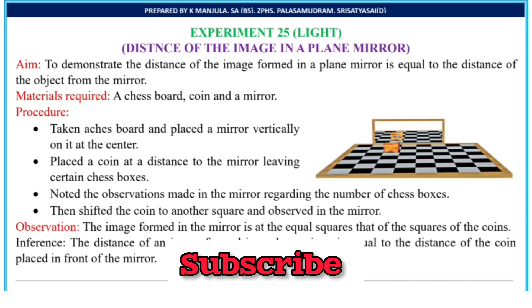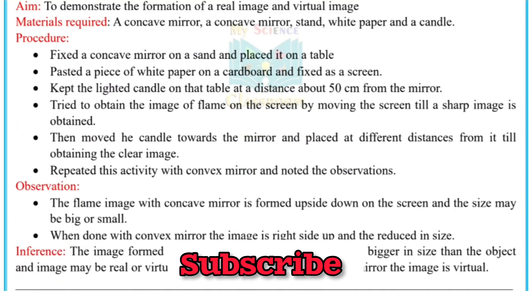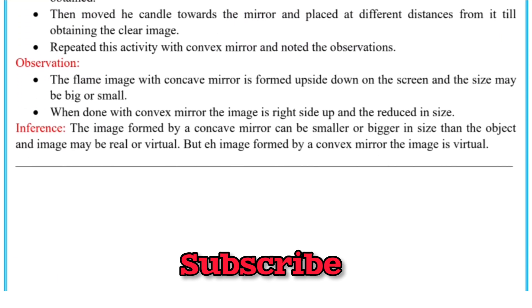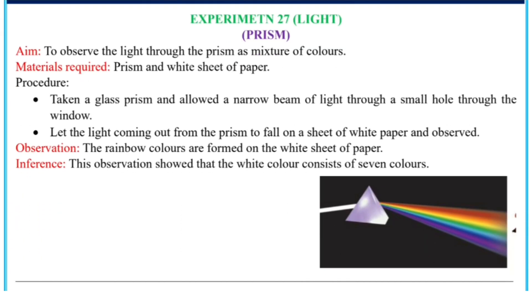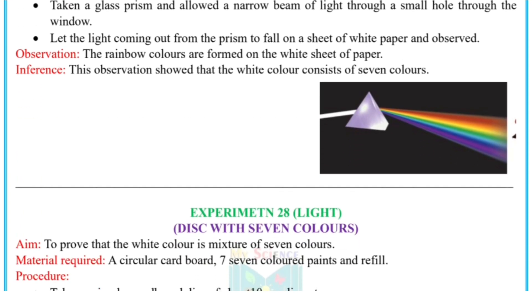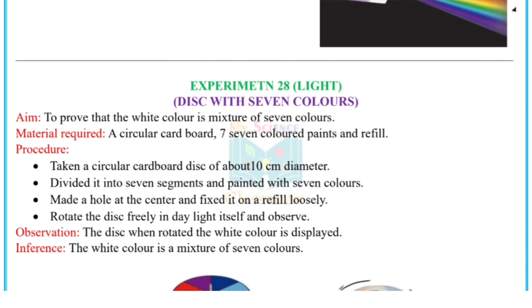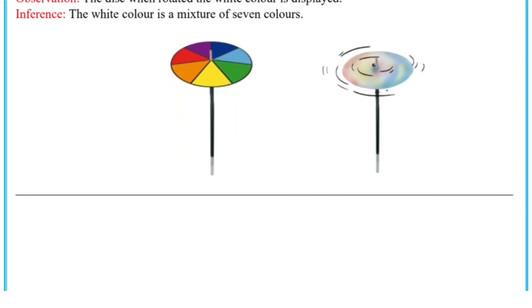Experiment number twenty-four is reflection of light from the light chapter. Experiment number twenty-five is light: distance of the image in a plane mirror. Experiment number twenty-six is light: real image. Please like, share, and subscribe to the channel. The last experiment, number twenty-seven, is light: prism. And the final experiment is a disk with seven colors.